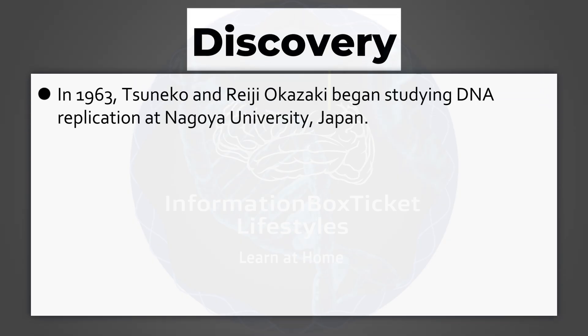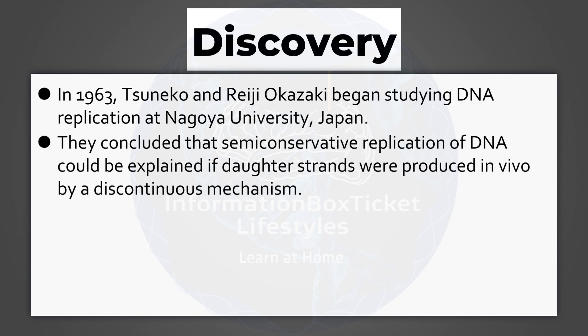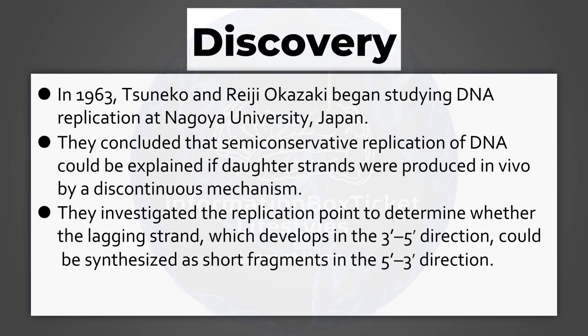In 1963, Tsuneko and Reiji Okazaki began studying DNA replication at Nagoya University, Japan. They concluded that semi-conservative replication of DNA could be explained if daughter strands were produced in vivo by a discontinuous mechanism. They investigated the replication point to determine whether the lagging strand, which develops in the 3' to 5' direction, could be synthesized as short fragments in the 5' to 3' direction.